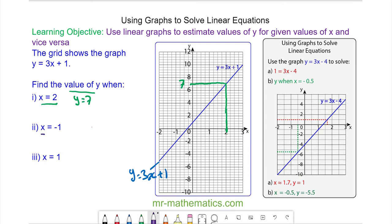For part 2 when x equals negative 1 we draw a vertical line at negative 1 on the x-axis down to the blue line and then a horizontal to the y-axis and you can see that y is equal to negative 2.